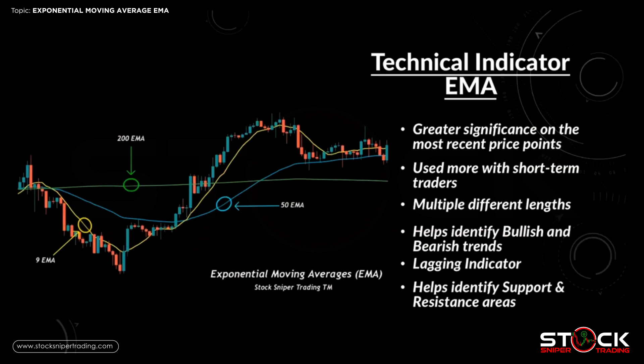An Exponential Moving Average, EMA, is a widely used moving average that places greater significance on the most recent price points. An EMA reacts more significantly to recent price changes than the SMA, the Simple Moving Average, and is used more with short-term traders. The EMA is a technical indicator, like all moving averages, used for entry and exit signals based on crossovers from the historical average.